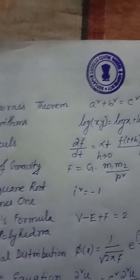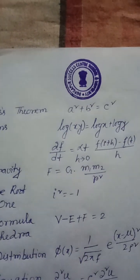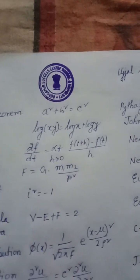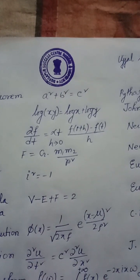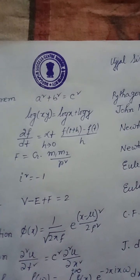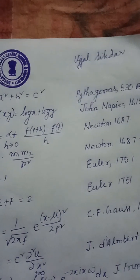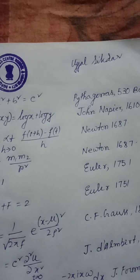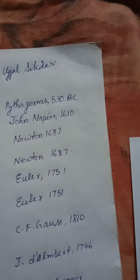Equation 5 — the square root of minus 1: i² = −1. Euler, 1751. Equation 6 — Euler's formula for polyhedra: V − E + F = 2. Euler, 1751.